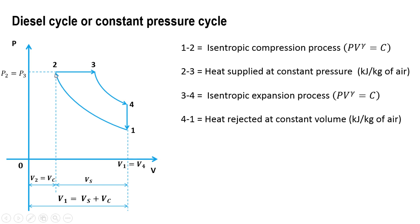At point 2, the volume is V2, also known as the clearance volume. From 1 to 2 is the stroke of the piston, so this is known as the stroke volume. As you can see from the PV diagram, volume V1 is equal to Vs plus Vc, where Vc equals V2. Heat is supplied at constant pressure during 2 to 3, which is a constant pressure line, and point 3 is known as the cutoff point.